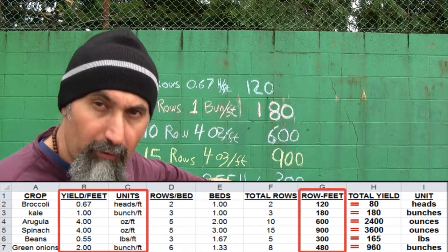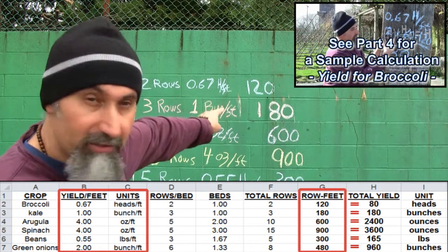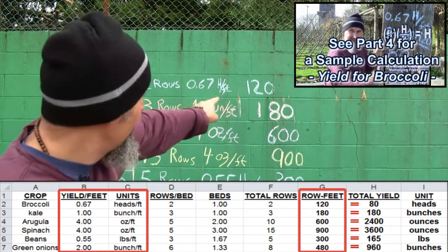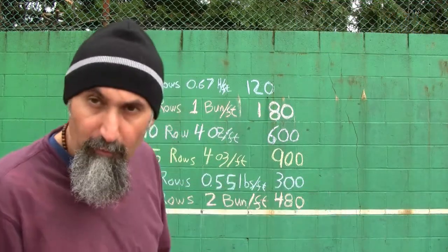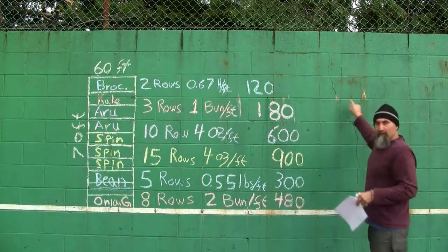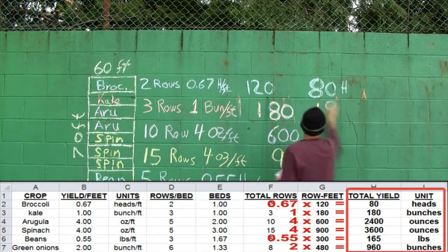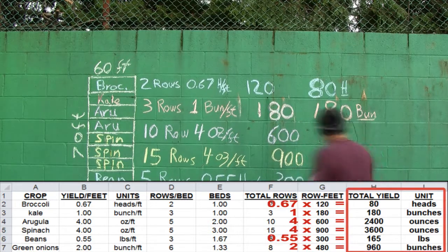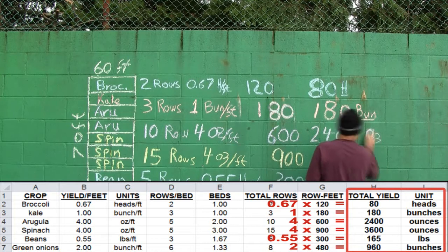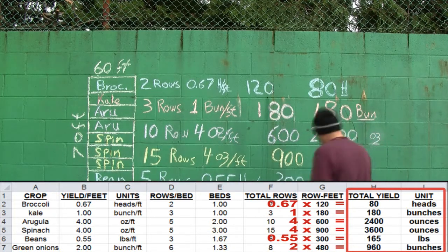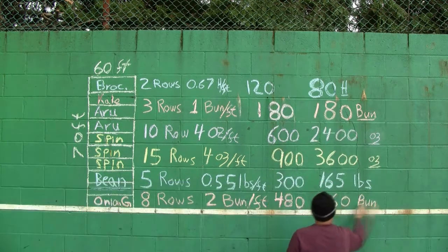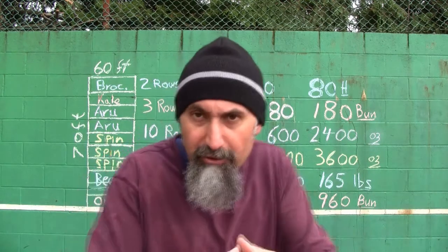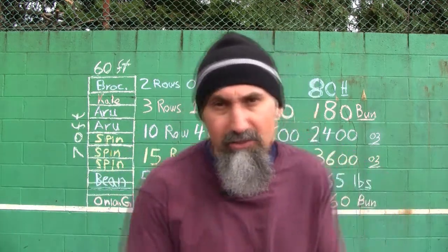To calculate the total yield, we multiply the total row feet by the yield spec per crop. For broccoli: 120 times 0.67 heads per foot gives us about 80 heads. For kale: 180 times 1 bunch per foot gives us 180 bunches. For arugula: 2,400 ounces. For spinach: 3,600 ounces. For beans: 165 pounds. For green onions: 960 bunches.